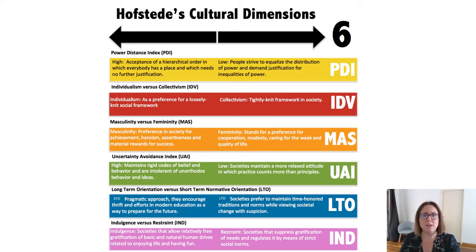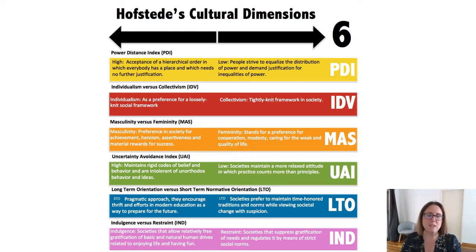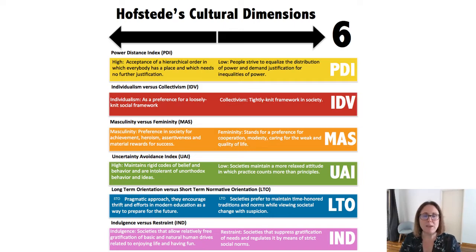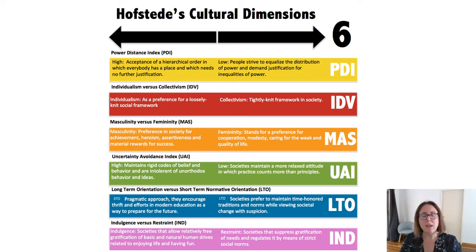The third dimension — and I did not name this, so please forgive Hofstede for the era in which it was developed — is called masculinity-femininity. This dimension is not based on the idea of more males or females in a society; it actually has nothing to do with gender. It's based around achievement orientation, assertiveness, and material rewards for success, which are characteristics desired in a more masculine-oriented society, as compared to a feminine-oriented society, which stands for greater cooperation, modesty, caring, and a focus on quality of life rather than achievement.